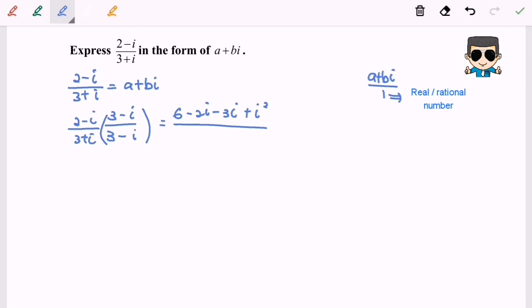So since it is a conjugate, 3 plus i and 3 minus i are conjugates to each other, so we can use the formula a squared plus b squared.